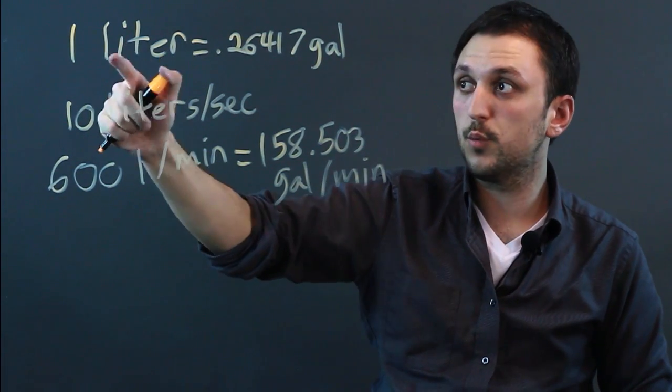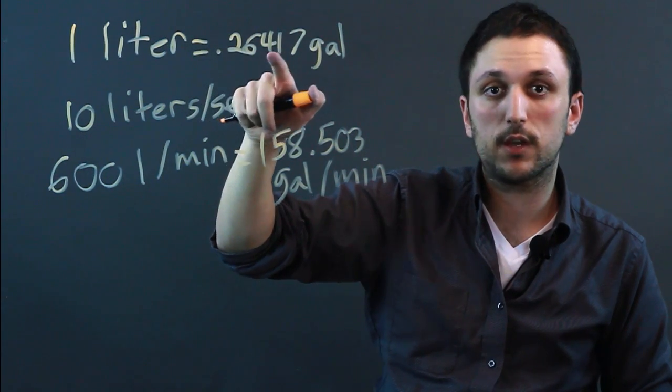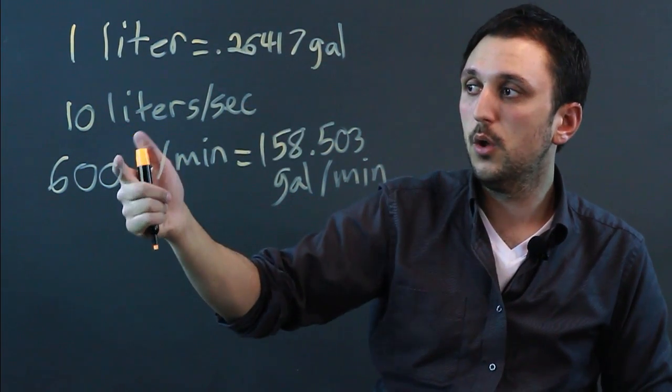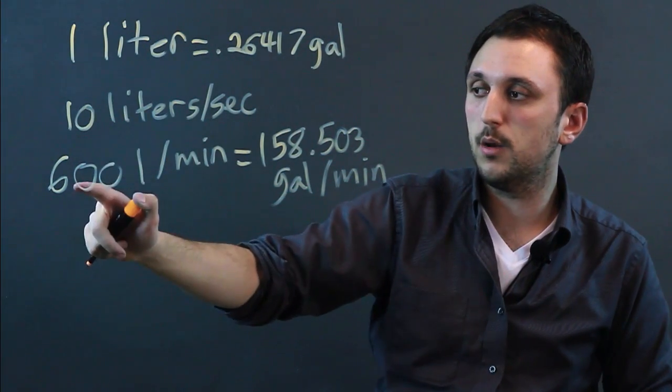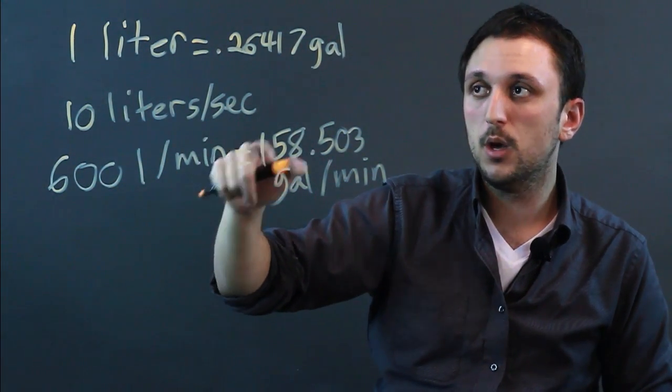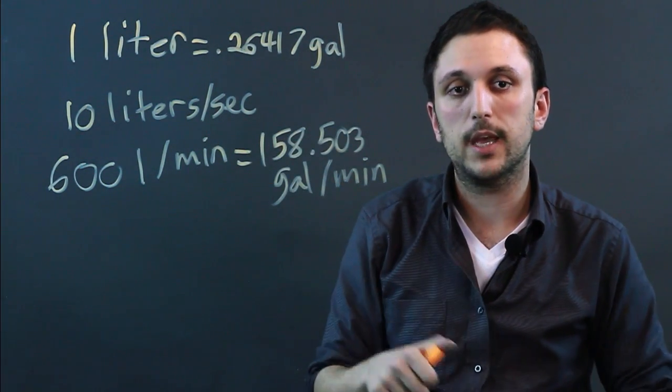So again, because one liter equals 0.26417 gallons, when we take our 10 liters per second and we have 600 liters per minute, we multiply this by 600 and we get 158.